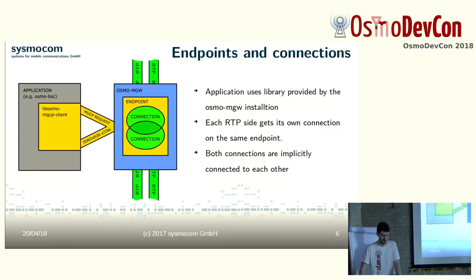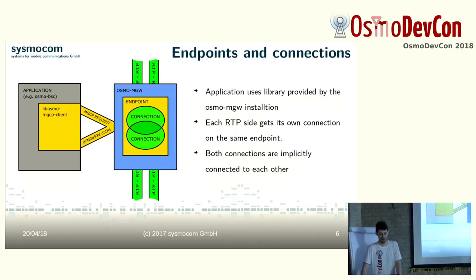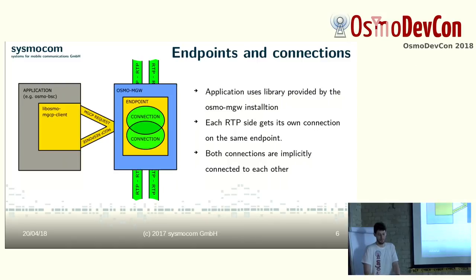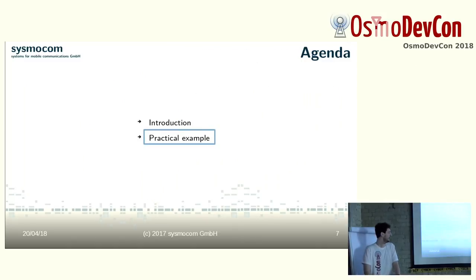Here we have the model of how that would work. The application has the MGCP client running, which does the requests, sets up the connections on the endpoint, and routes the RTP stream. Now let's go ahead with some practical examples.